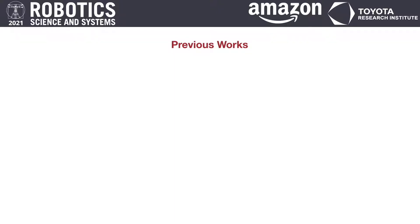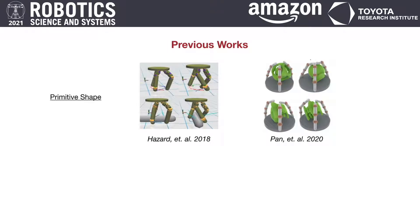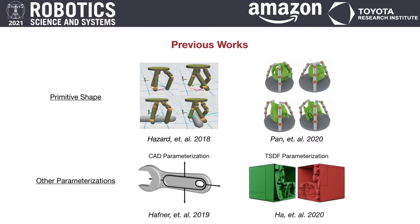Previous works tried to solve this representation problem by modeling each robot component by a primitive shape. However, those primitive shapes cannot describe the complex designs required for interesting manipulation tasks. Other choices are using CAD or signed distance field parameterizations, but both of them are slow, non-differentiable, and hard to be applied to articulated robot designs.